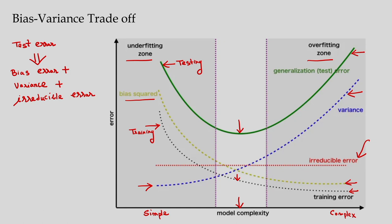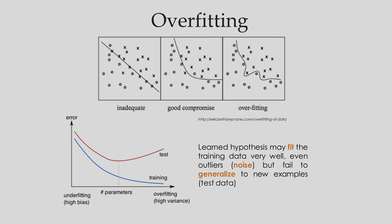High bias corresponds to underfitting and high variance corresponds to overfitting. Our objective is to build a model that achieves a balance between bias and variance so that the combined error of these competing forces is minimum — that is the objective of the bias-variance trade-off. Moving to the next figure, here I have shown a classification problem with two classes. In the first case I am considering a very simple model, which is not good for classification because I get a decision boundary with many misclassifications.